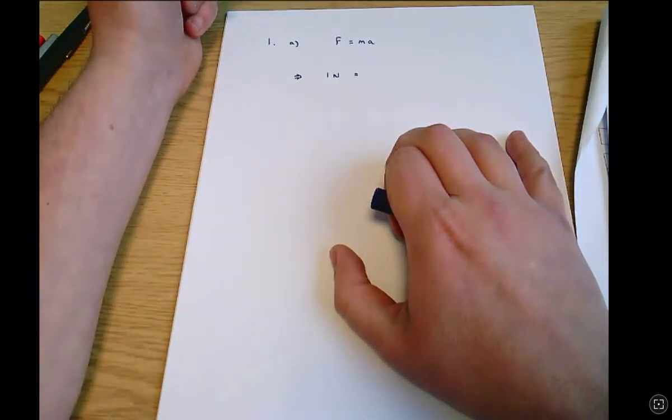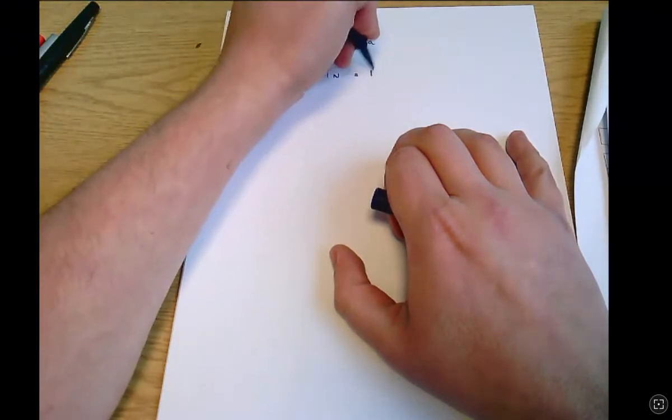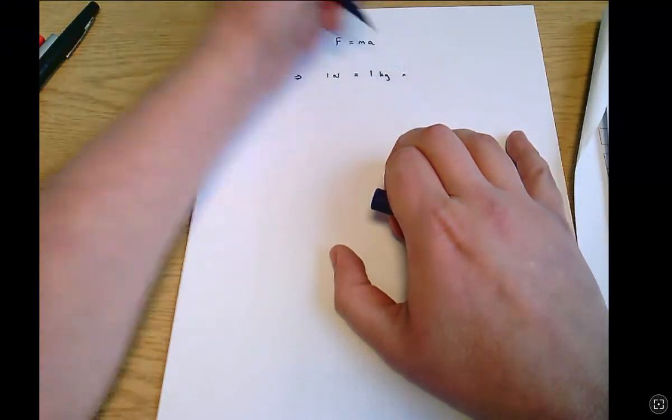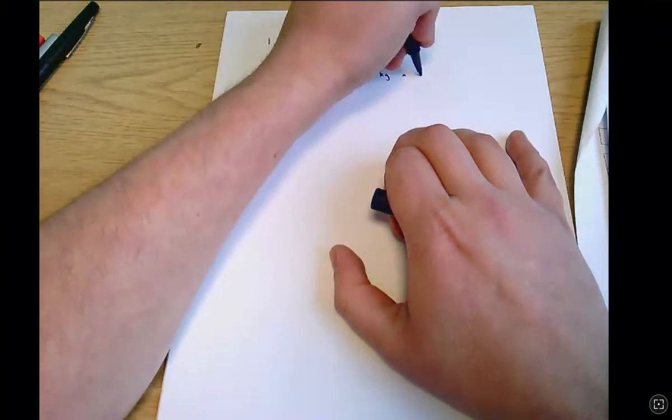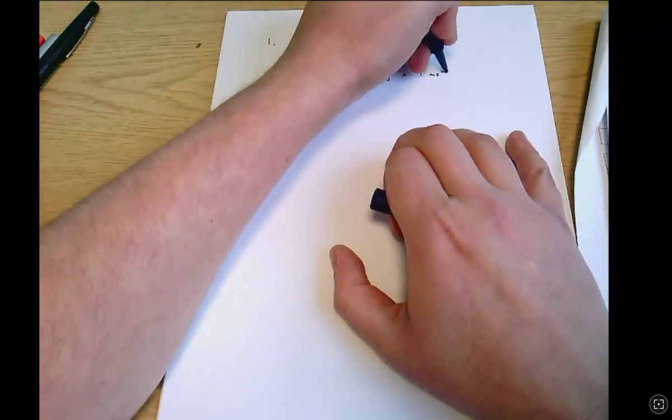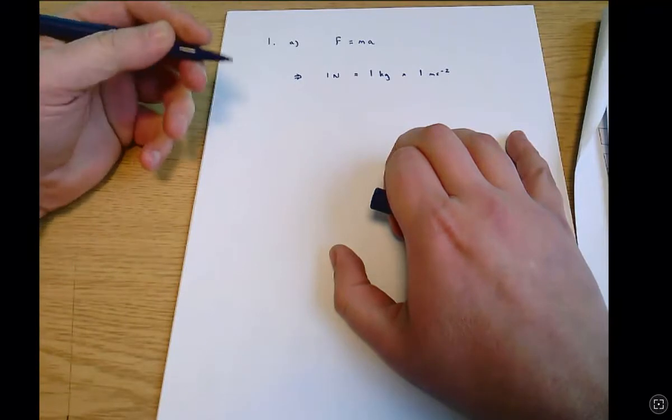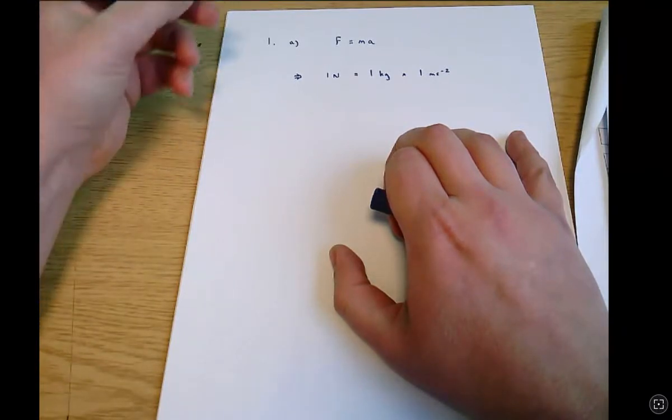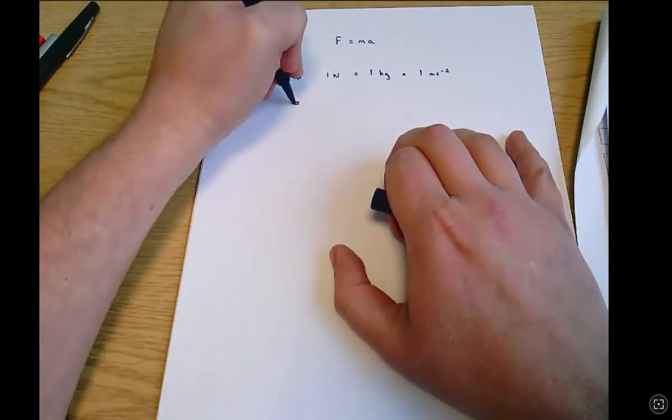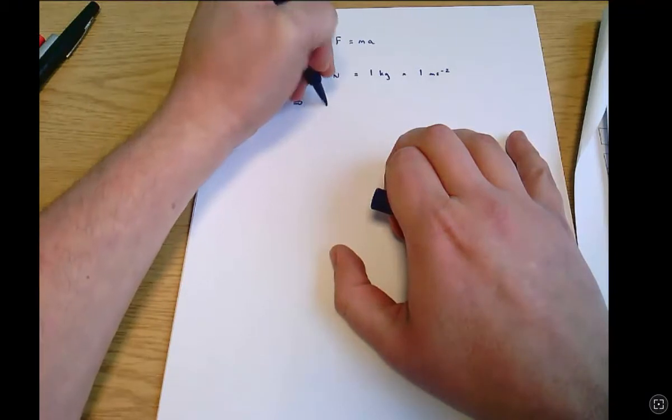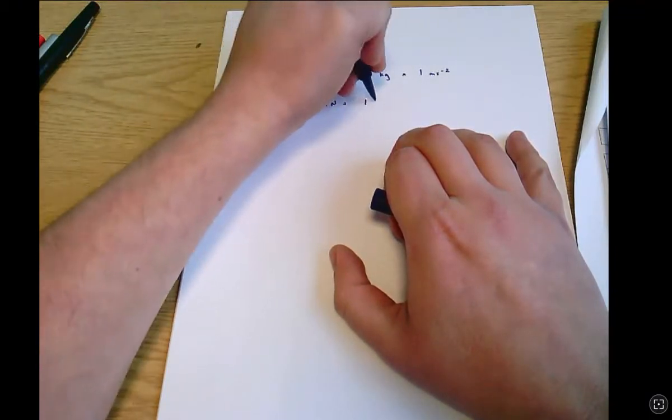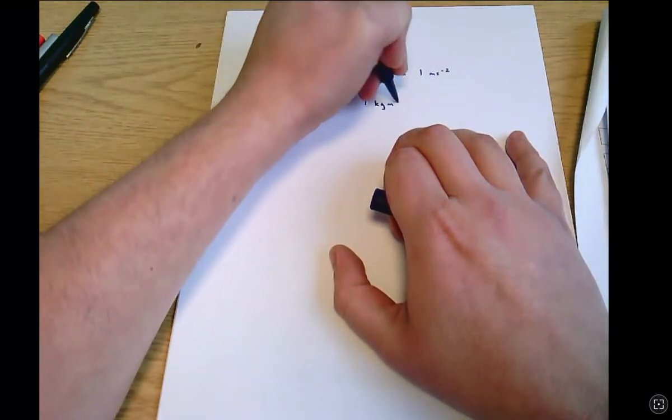The units on the right-hand side of the equation are that mass is measured in kilograms and acceleration is measured in meters per second per second. So we can write down just multiplying all of that through one Newton equals one kilogram meter per second per second.